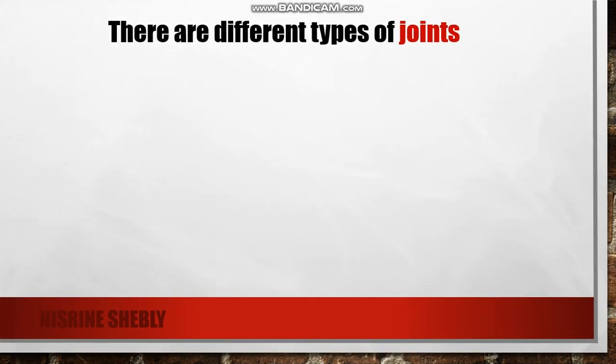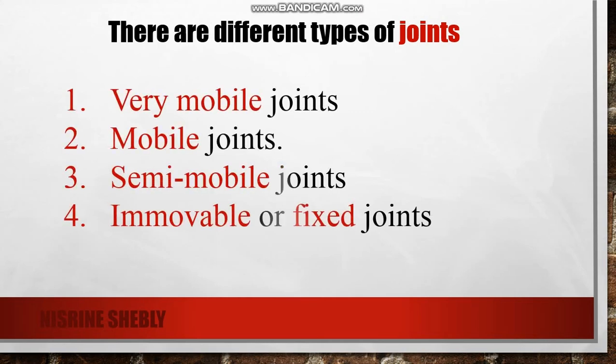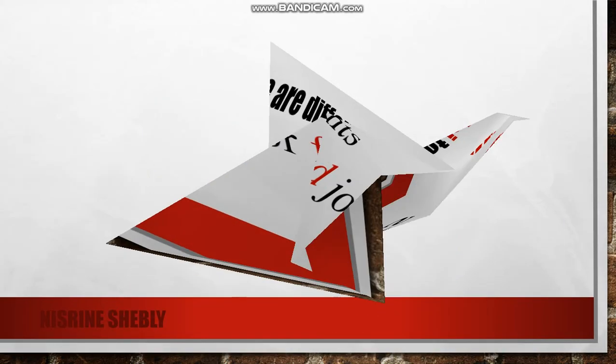There are different types of joints: very mobile joints, mobile joints, semi-mobile joints, and immovable or fixed joints.